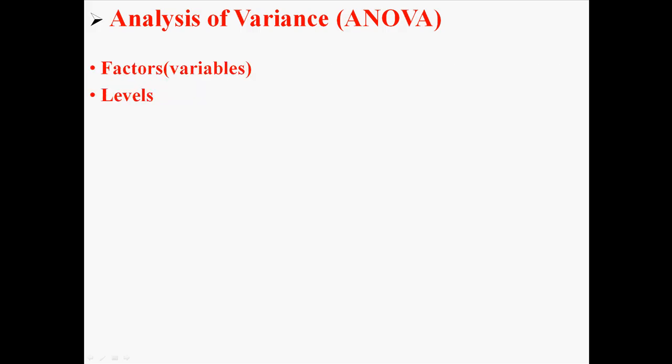Now in ANOVA you have factors and you have levels. Factors are just your variables, like in one case gender could be a factor, and levels are the levels of those variables. Like gender could have two levels, male and female.